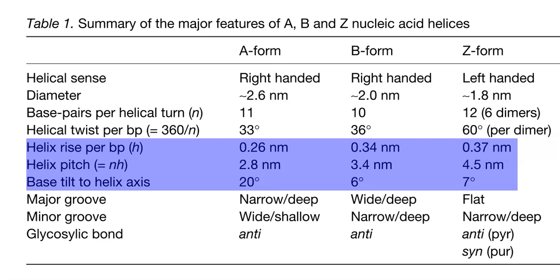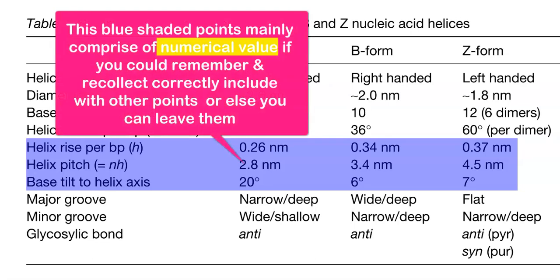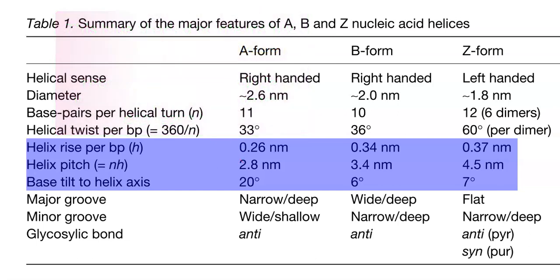The major groove is narrow and deep in A form, wide and deep in B form, and highly flat in Z form. The minor groove is wide and shallow in A form, narrow and deep in B form, and narrow and deep in Z form as well. The glycosidic bond — which attaches the sugar to the nitrogenous base — is in anti-configuration in A and B forms, whereas in Z form it is anti-configuration for pyrimidines and syn-configuration for purines.